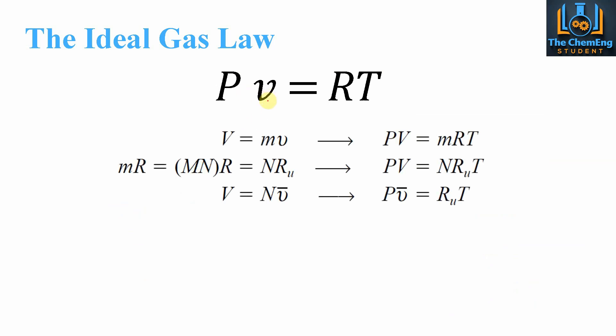Now if we take the equation here, we can start to rearrange this for different purposes. We start off with PV equals RT. If we say that V is equal to M multiplied by V, then we can rearrange this to have PV equals MRT. This is one that is most familiar to chemical engineers. We can also simplify this and have MR equal to MN multiplied by R, which can also be written as N, the number of moles multiplied by the universal gas constant. So here we'd have PV equals NRT. This is another one that is commonly used by chemical engineers.